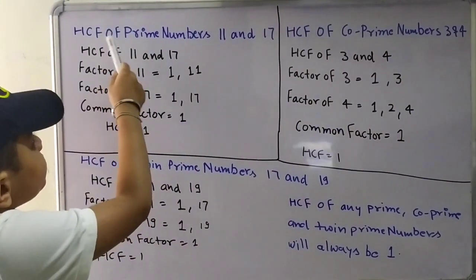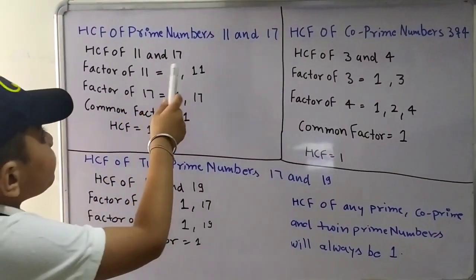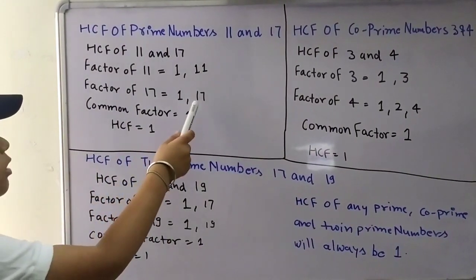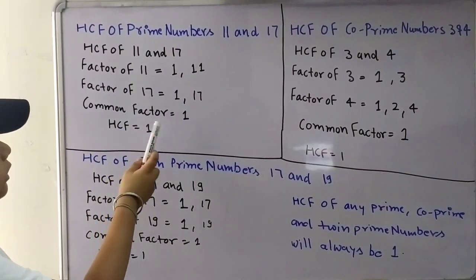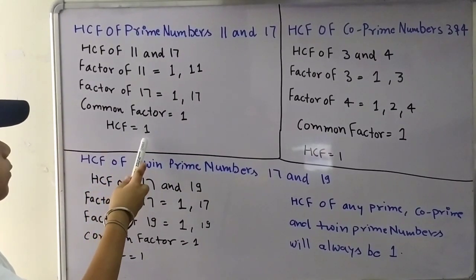HCF of prime numbers 11 and 17. Factors of 11 are 1 and 11. Factors of 17 are 1 and 17. Common factor is 1. HCF, the highest common factor, is 1.